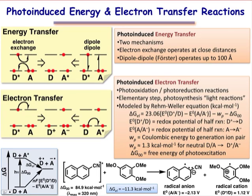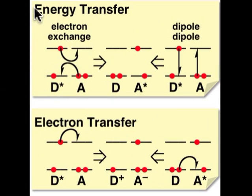The two bimolecular photochemical reactions involving the exchange of electrons are known as energy transfer, in which two electron exchanges are involved, and electron transfer, in which just one electron exchange is involved.